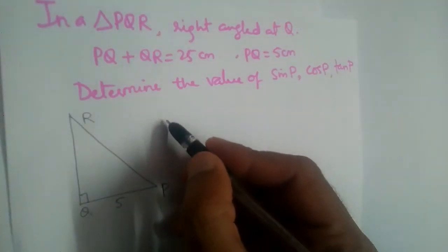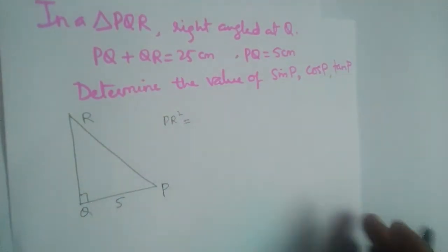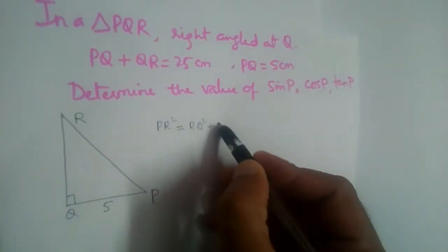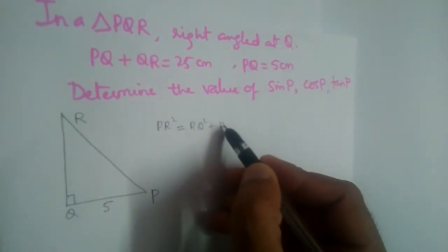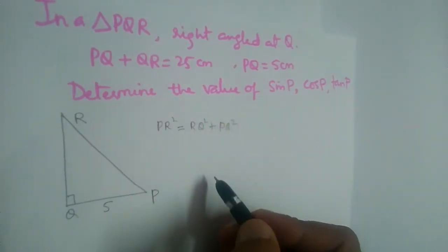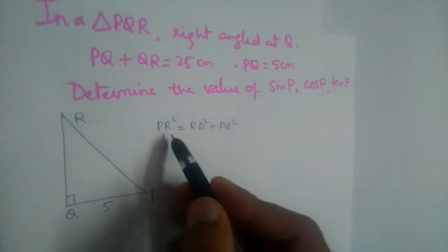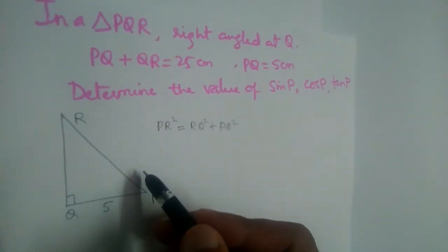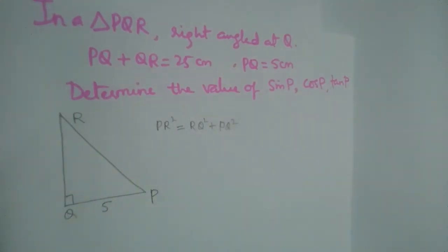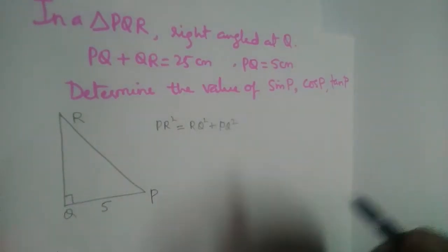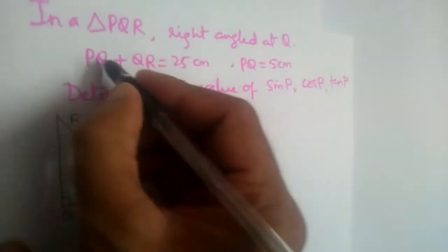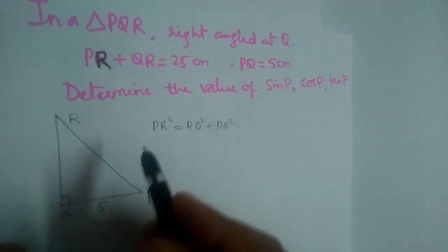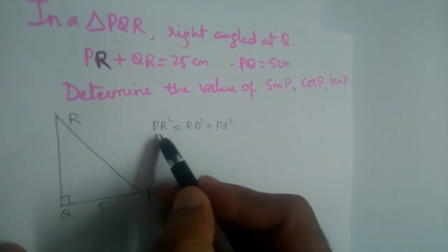Apply Pythagoras theorem to this now. PR² will be equal to RQ² plus PQ². But do we know what is PR²? There was a slight mistake. So this is PR actually. So do we know what is PR²?